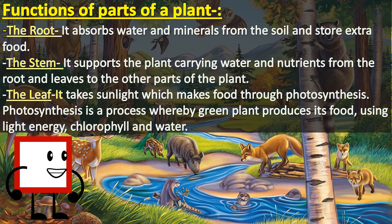Functions of parts of a plant. The root absorbs water and minerals from the soil and stores extra food. The stem supports the plant, carrying water and nutrients from the root and leaves to the other parts of the plant. The leaf takes in sunlight and makes food through photosynthesis. Photosynthesis is the process whereby a green plant produces its food using light energy, chlorophyll and water.